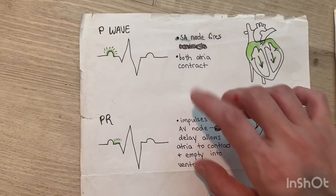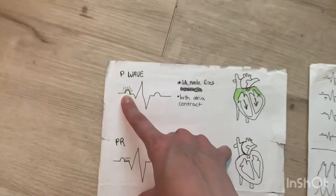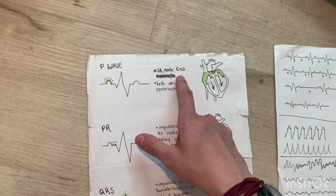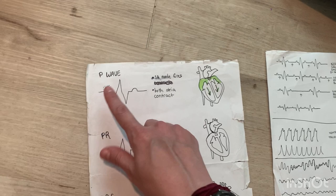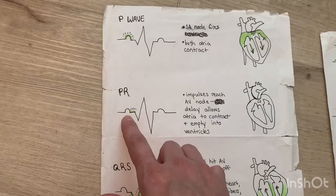The P-wave means the sinoatrial node is firing. You should know it's 60 to 100 beats a minute generally. The SA node is firing and stimulating both of the atria to contract, so the P-wave is associated with the atrium.